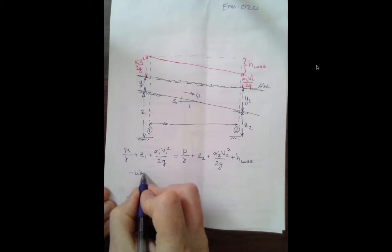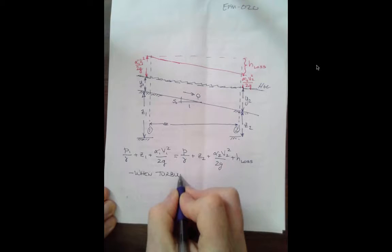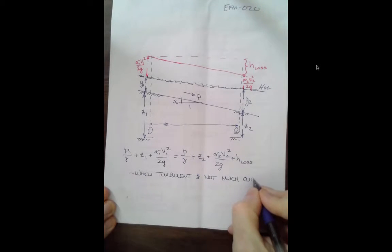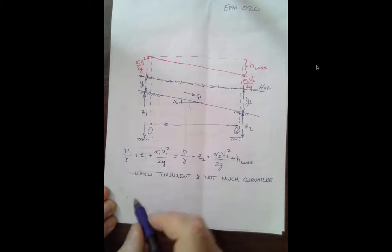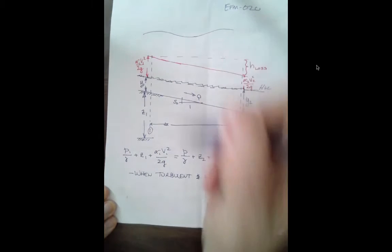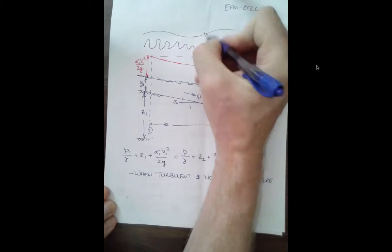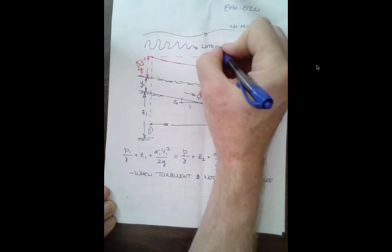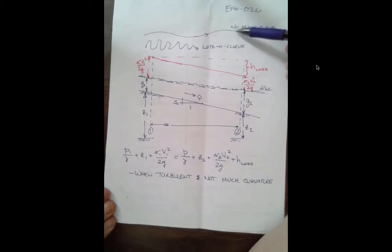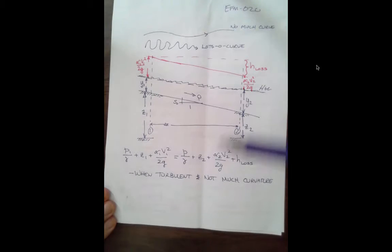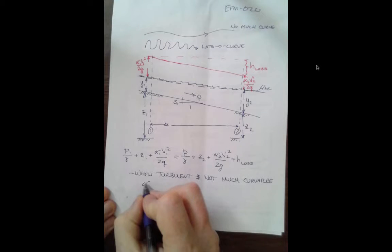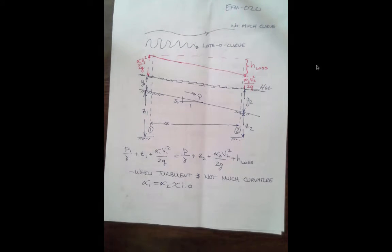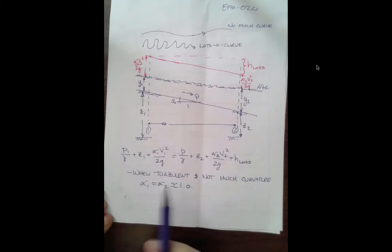When the flow is turbulent, which is reasonably common, and not much curvature, and this is in the plan view. So when the channel looks like that versus looks like that, not much versus lots. When we're in the upper sketch of path line in relatively turbulent flow, the kinetic energy correction coefficients are essentially one point, are essentially unity.